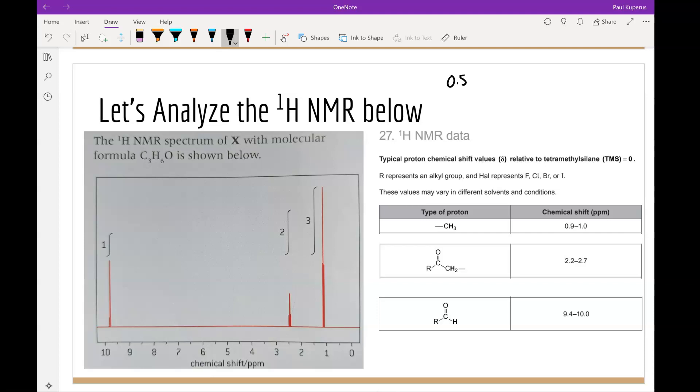C3H6O, 0.5 times 2 times the number of carbons plus 2 minus the number of hydrogens, 6. And we get 8 divided by 2, which is equal to 1. So there's either one double bond or a ring structure. And because there's only three carbons, it's more likely that there's a double bond.